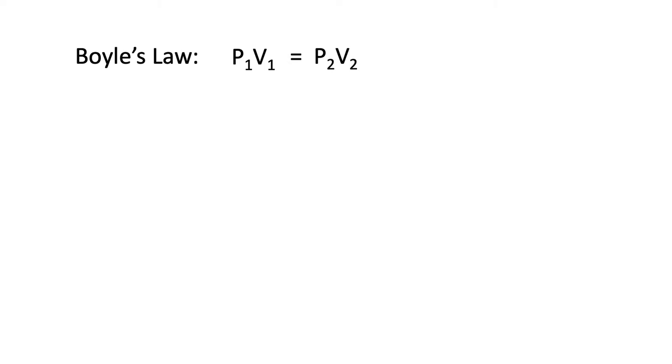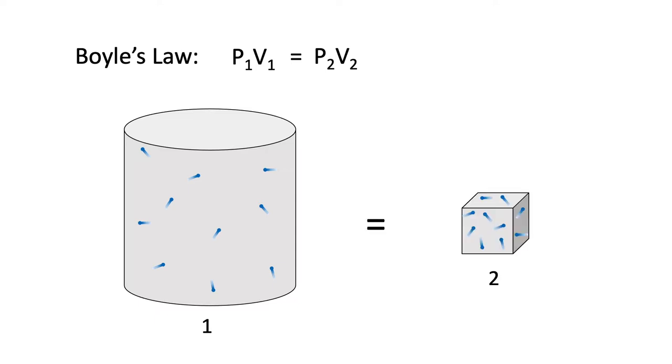Boyle's law states that the pressure and volume of a fixed quantity of gas obey a reciprocal relationship. This means that if I had a big cylinder of gas and I multiplied the volume of the cylinder by the pressure created by the gas inside, I would get the exact same thing if I then transferred that very same gas into a small cube and did the same calculation.